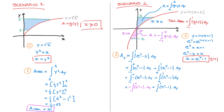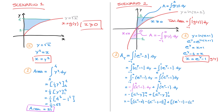Evaluating these integrals: integrating e to the y minus one gives e to the y minus y. For the first part, that's the opposite of e to the y minus y evaluated from negative one to zero, plus e to the y minus y evaluated from zero to one. Substituting the limits: for the first bracket, that's e to the zero minus zero, minus e to the negative one minus negative one. For the second bracket, that's e to the one minus one, minus e to the zero minus zero. Now e to the zero equals one, e to the negative one equals one over e, and e to the one equals e.